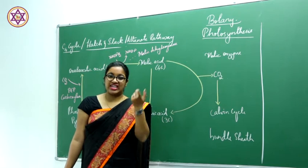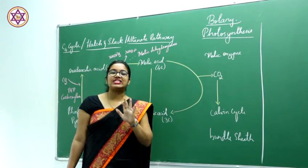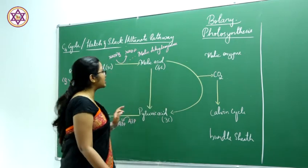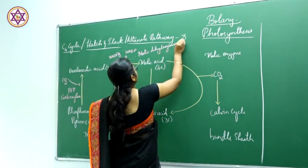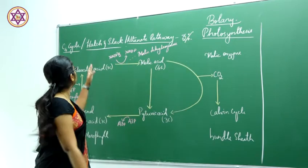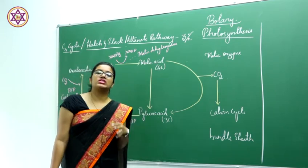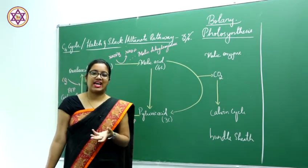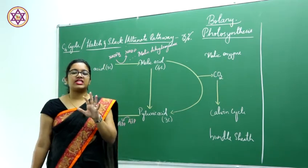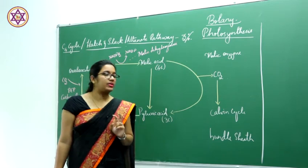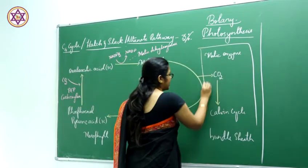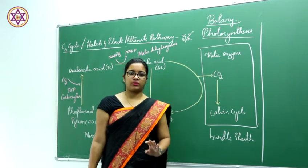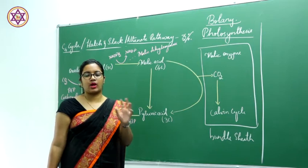Nearly 97% of plants carry out the Calvin cycle for fixation of carbon dioxide, whereas only 3% of plants carry out the C4 cycle. The C4 cycle has its own speciality — it occurs in Kranz anatomy, which means there is dimorphic chloroplast. The chloroplast in this particular plant shows 2 types: bundle sheath chloroplast and mesophyll cell chloroplast.